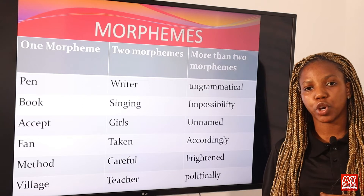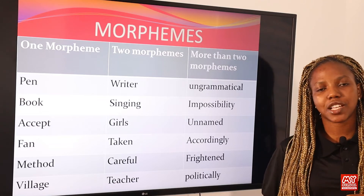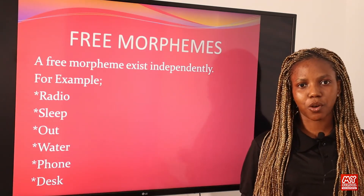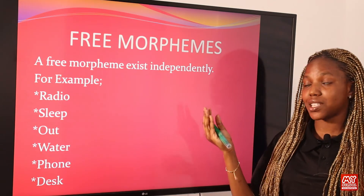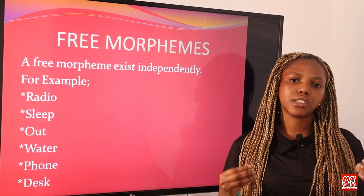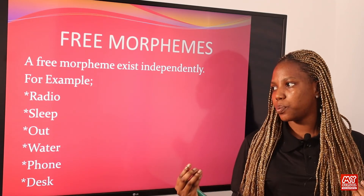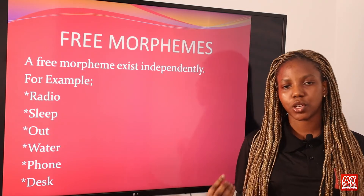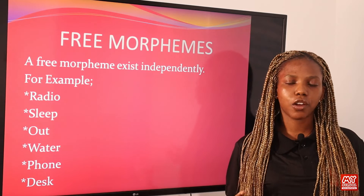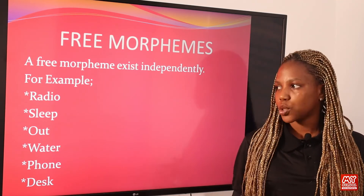So these are examples of morphemes. We can have one morpheme making up a word, two morphemes making up a word, and three morphemes making up a word. Now let's move to the next objective: the types of morphemes. There are two types of morphemes. The first type is called the free morpheme. A free morpheme exists independently — it can stand on its own and has meaning. For example: radio, sleep, out, water, phone, decks. All of these are called free morphemes, and they are usually one morpheme.